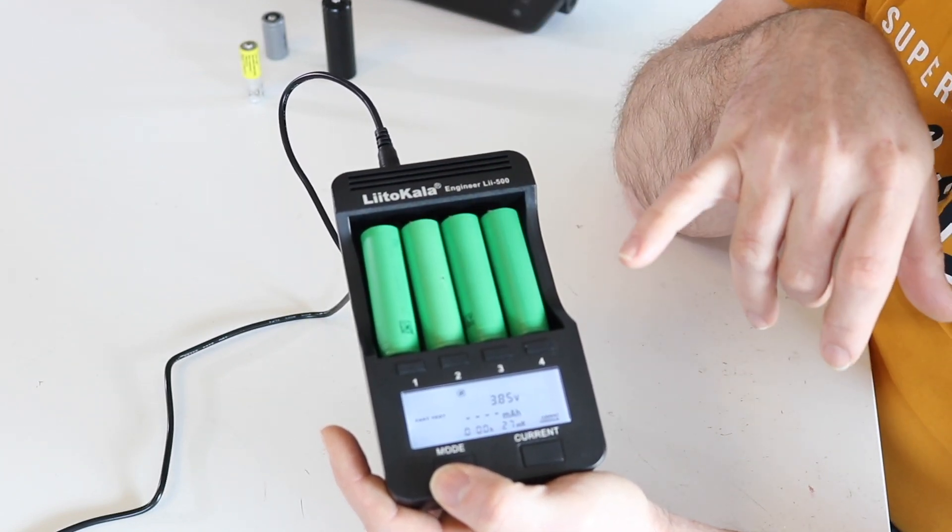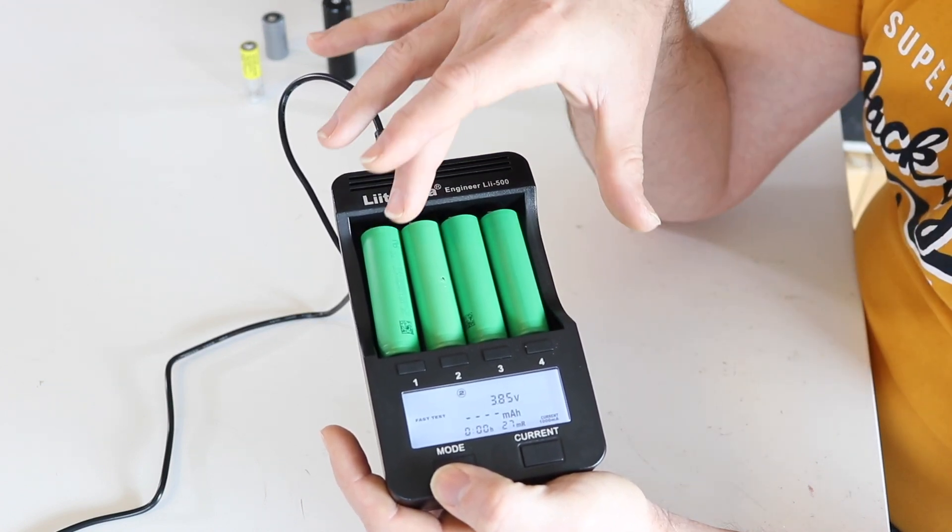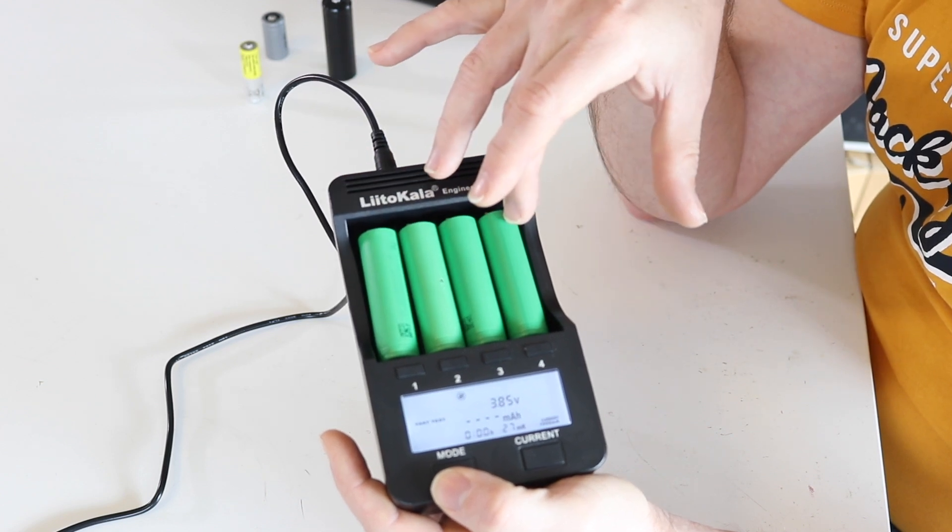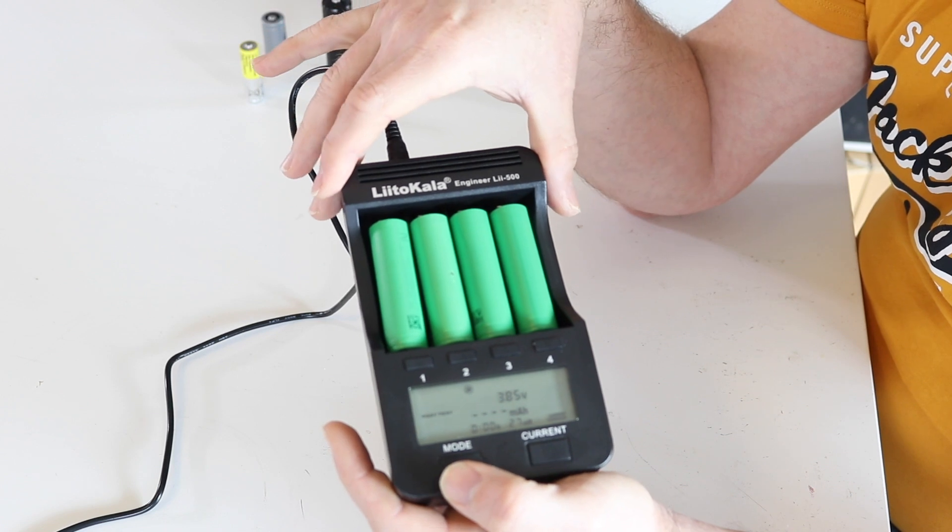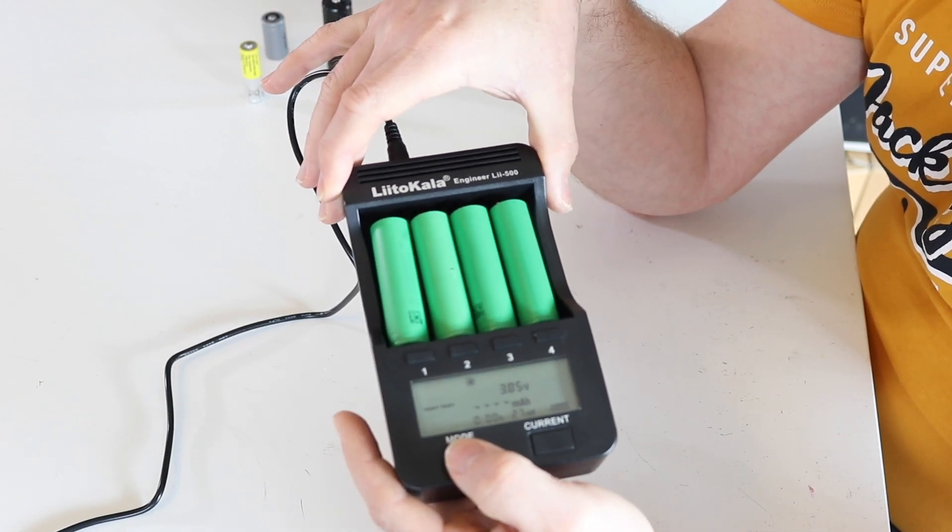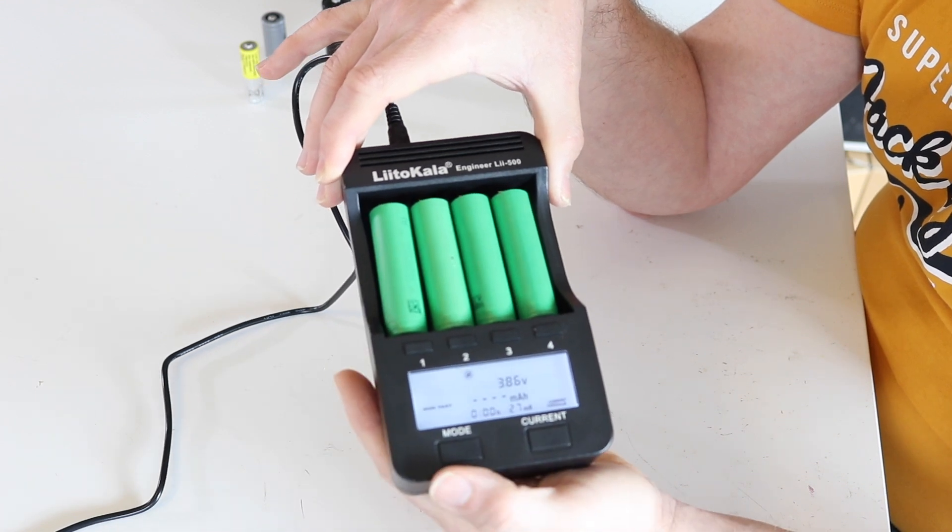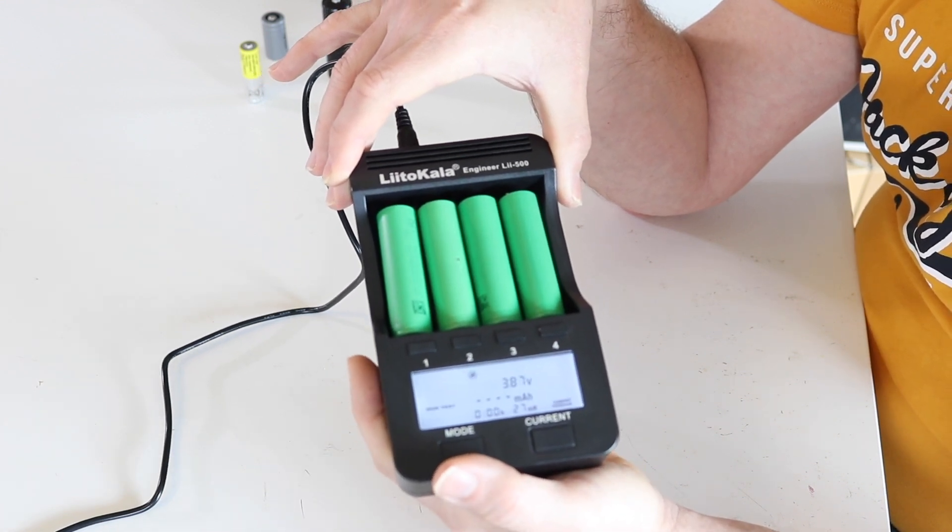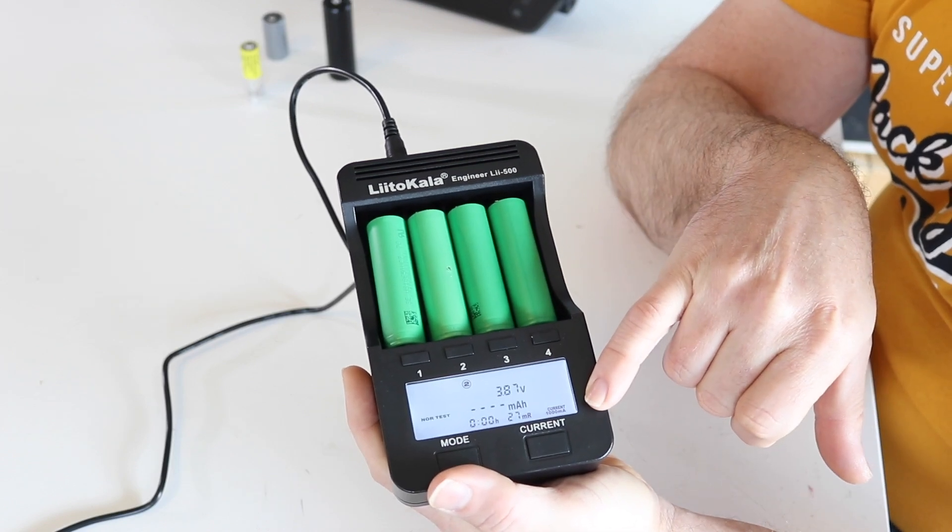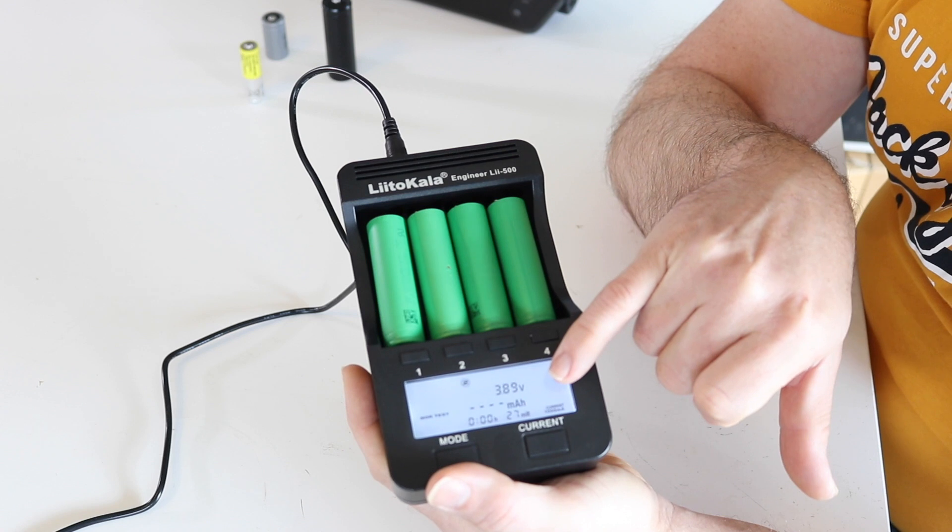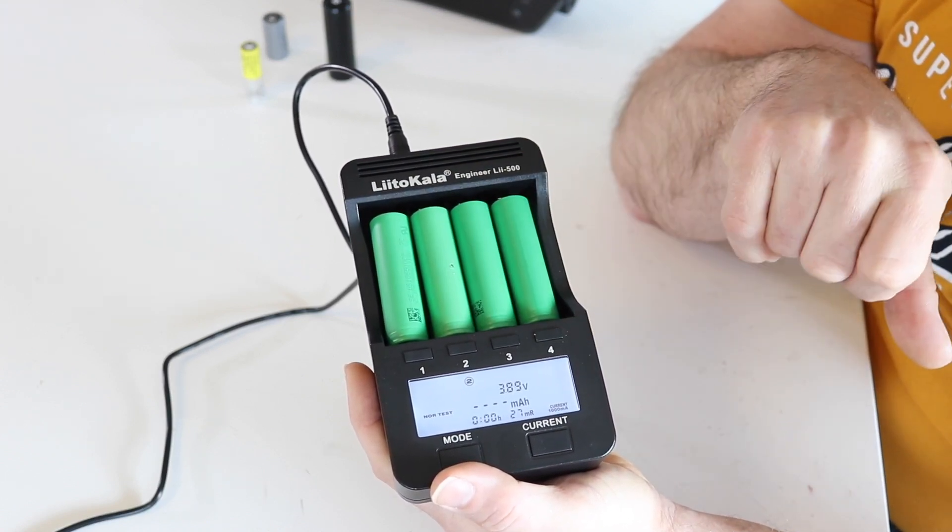Of course, this is not the way we want to do it. We want the cells to be completely charged first and then measure the capacity. So what do we have to do? Press mode again, go to the program normal test. If we say okay, normal test can run at 1 amp. As it starts now, it will charge from the current state to 4.2 volts.